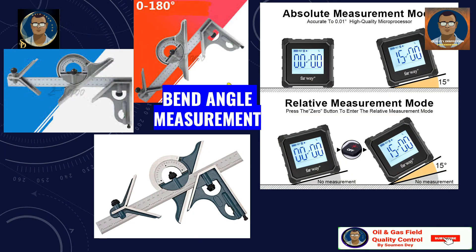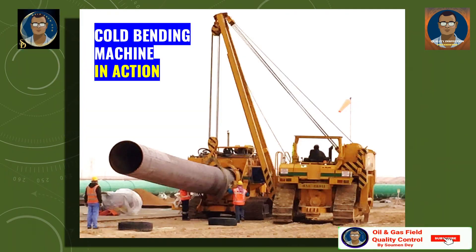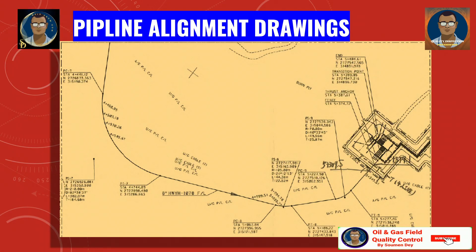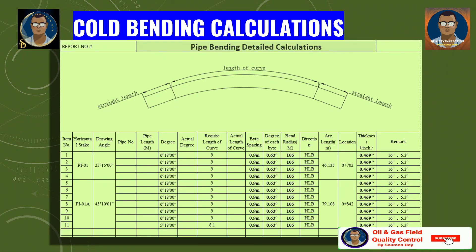The angle measuring instrument will be calibrated as per the approved calibration procedure and company requirements. The end of the pipe string will be chosen such that the maximum allowable angle of preformed bending per support decreases as the distance between the bend and either free end of the string increases. Here is an example of a pipeline alignment drawing showing from where the bend will be starting and the radius of bend, so that the bend calculation can be prepared and the engineer can calculate how many pipes are required, the degree of each bite, and the degree of the whole pipe.